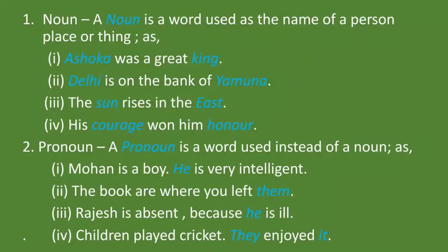Noun: A noun is a word used as the name of a person, place, or thing. किसी व्यक्ति, स्थान या चीज के नाम को noun कहते हैं. जैसे, Ashoka was a great king. यहाँ Ashoka और king दोनों ही noun हैं.